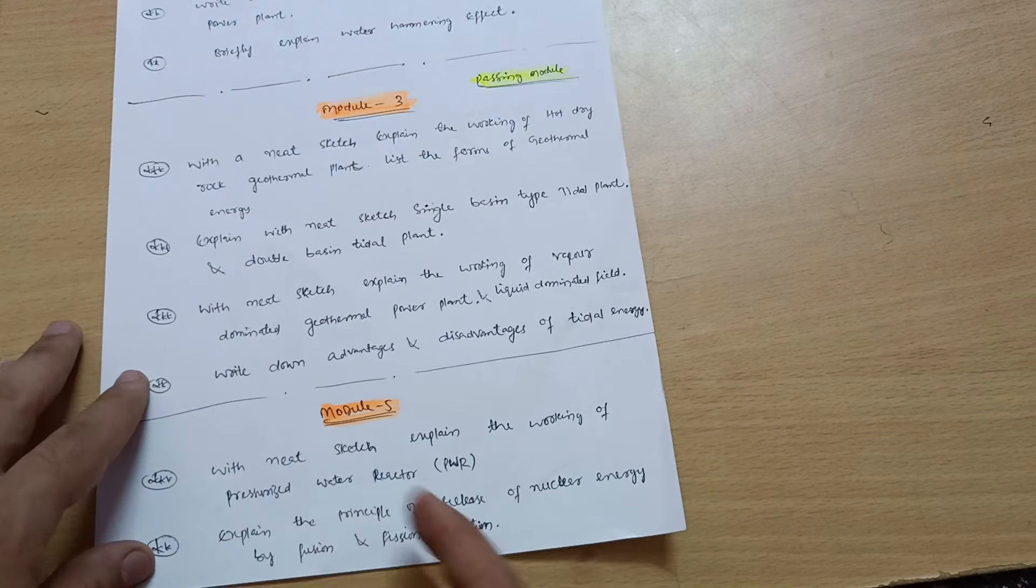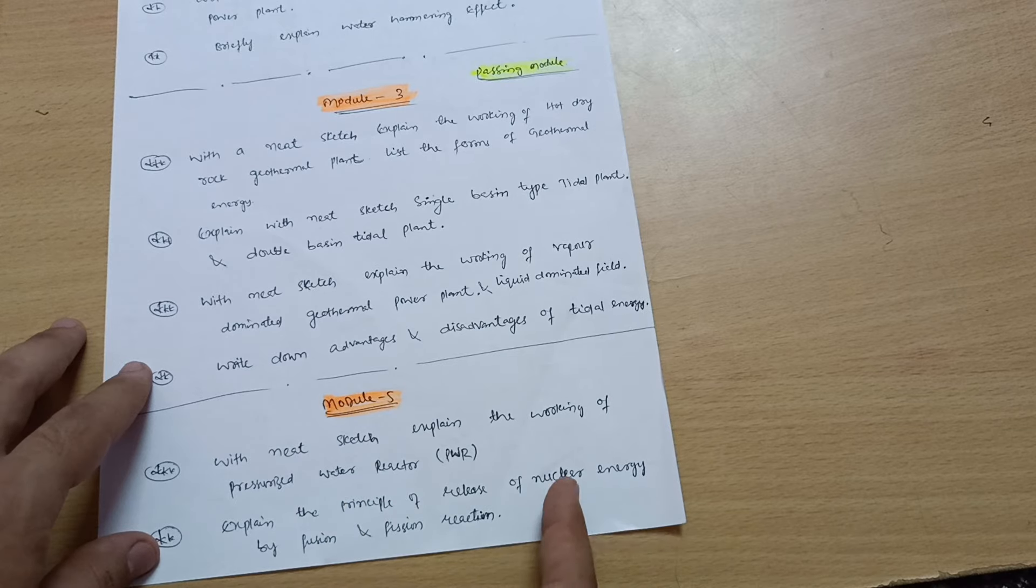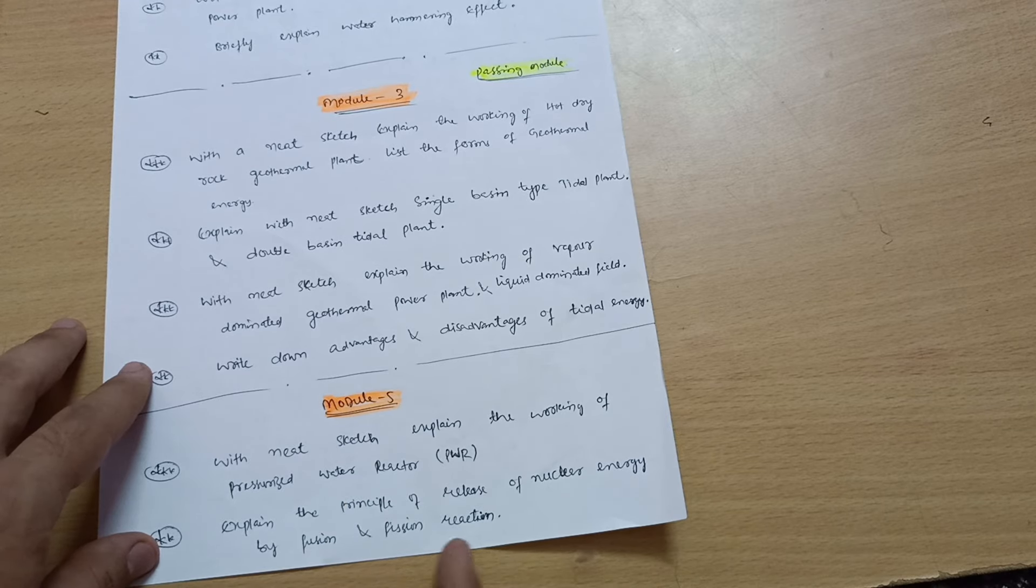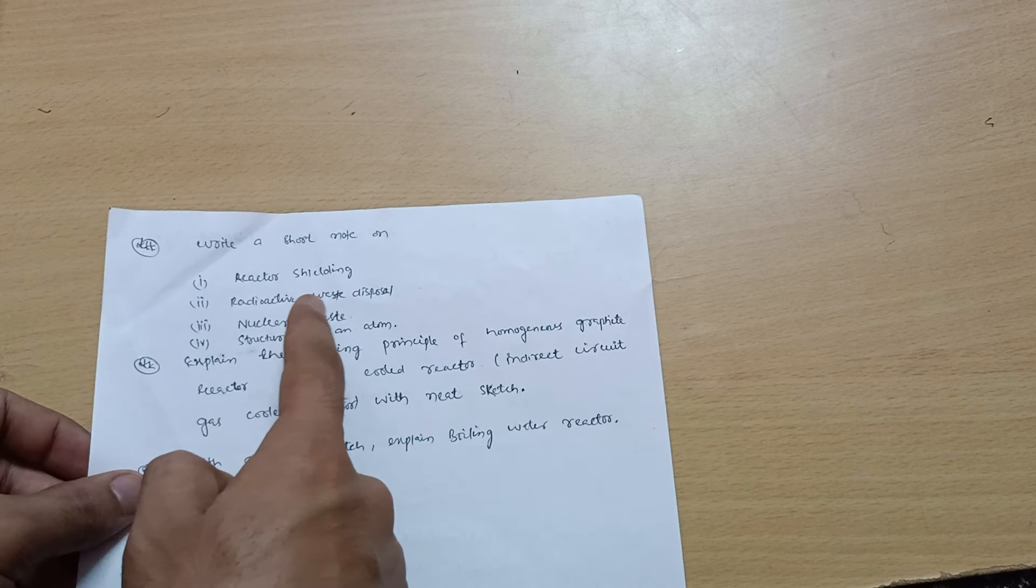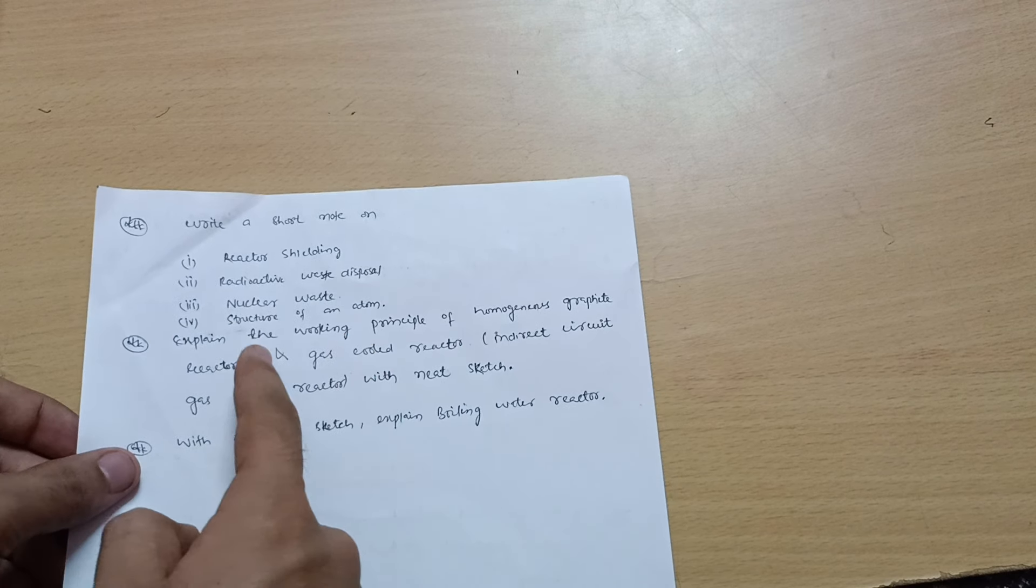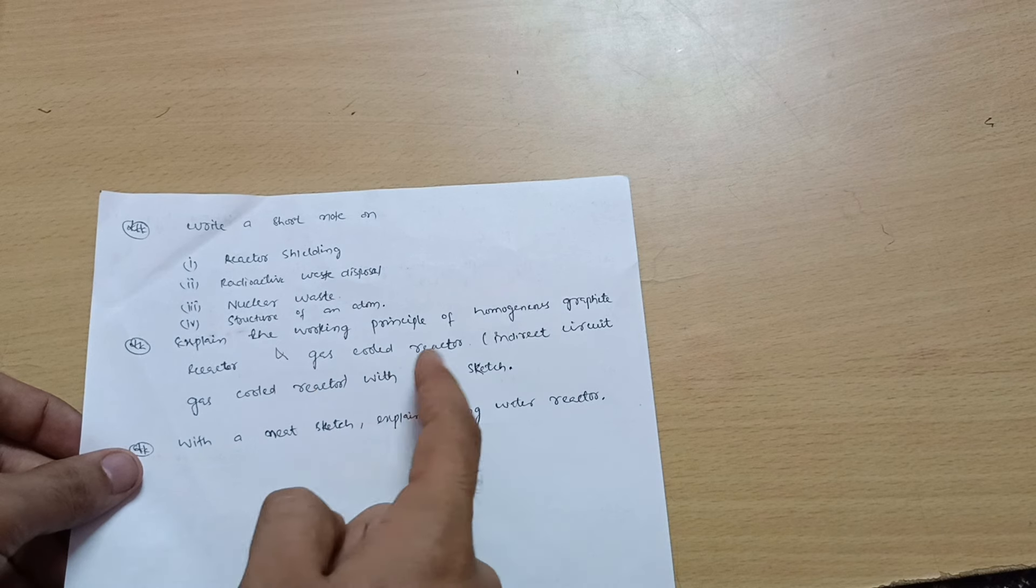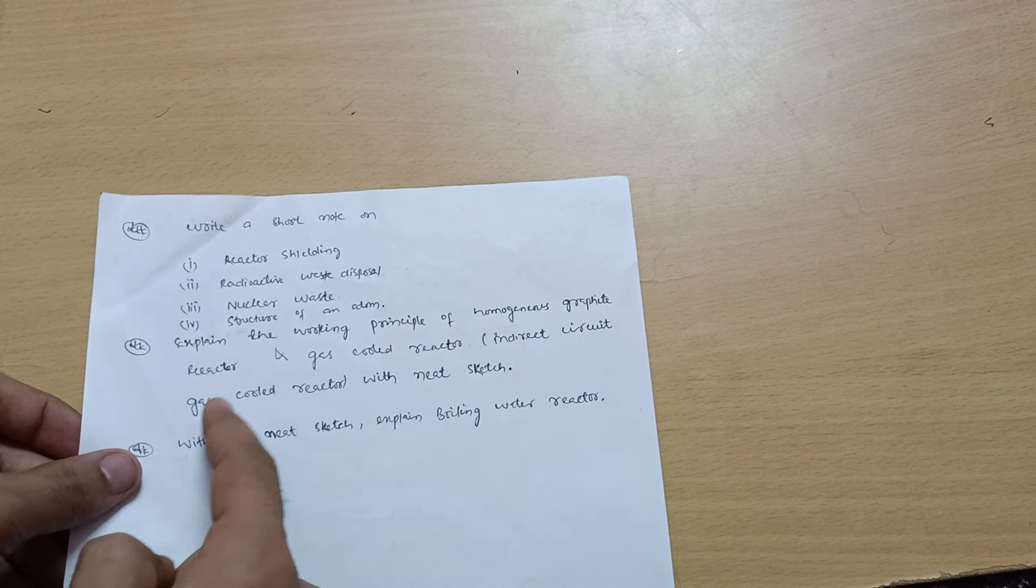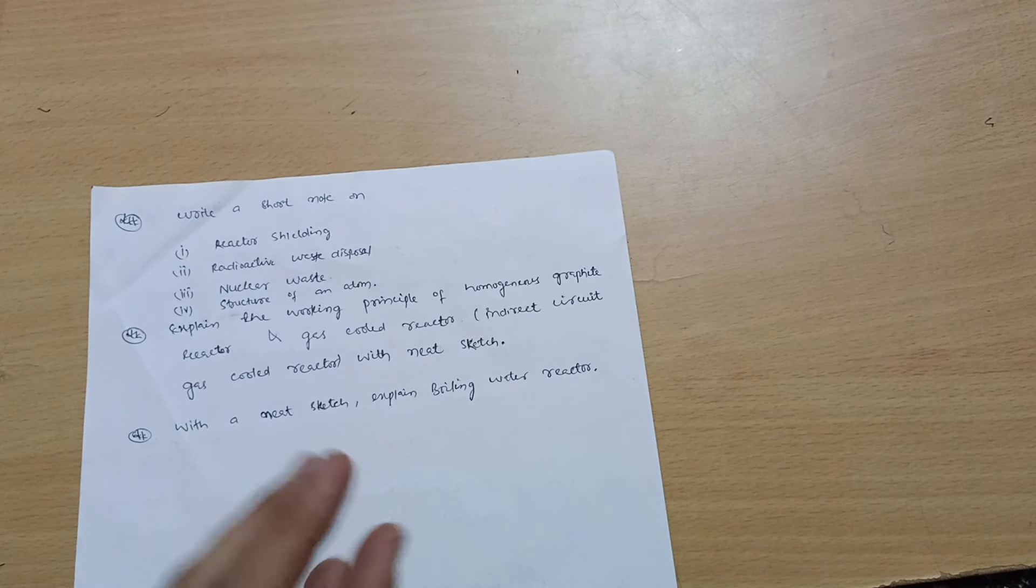Next is Module 5. With neat sketch explain the working of pressurized water reactor PWR. Explain the principle of release of nuclear energy by fusion and fission reaction. Write a short note on reactor shielding, radioactive waste disposal, nuclear waste disposal, and structure of an atom. Explain the working principle of homogeneous graphite reactor and gas cooled reactor or sometimes called as advanced gas cooled reactor with neat sketch. Last but not least, with neat sketch explain boiling water reactor.